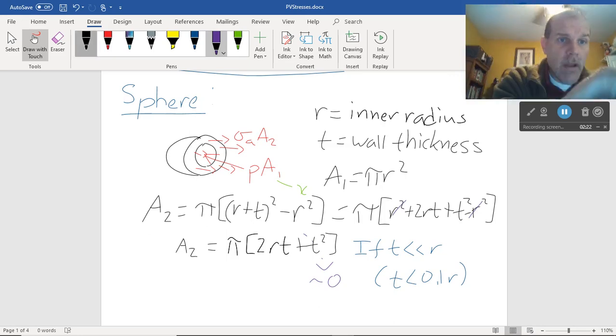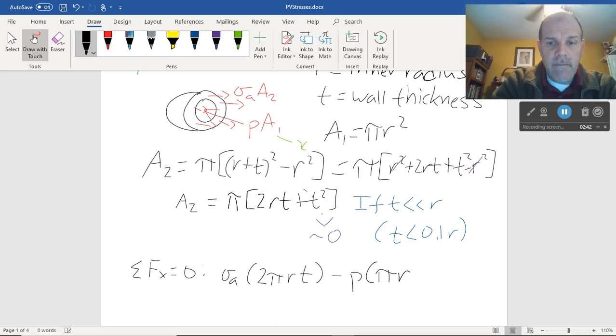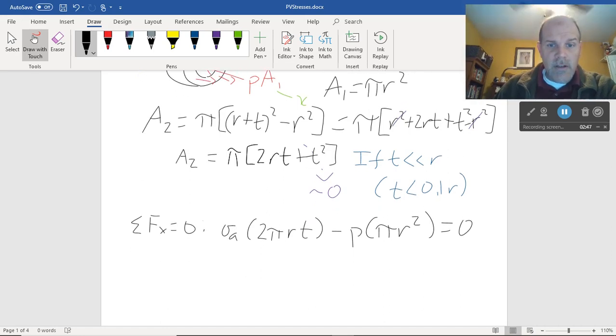So now, if I were to sum forces in the x direction and set that equal to 0, well, I'm going to have sigma a times 2 pi rt for a thin pressure vessel minus p pi r squared is equal to 0. I solve that and I get sigma a equal p r over 2t.